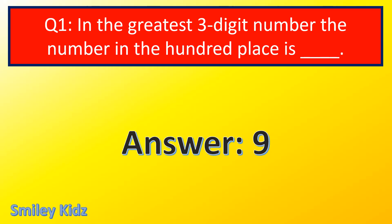The right answer is 9. In the greatest 3-digit number, the number in the hundreds place is 9. Why is it 9? The greatest 3-digit number is 9, 9, 9. They are asking for the hundreds place. In the hundreds place, we have 9. So our answer is 9. In the greatest 3-digit number, the number in the hundreds place is 9.